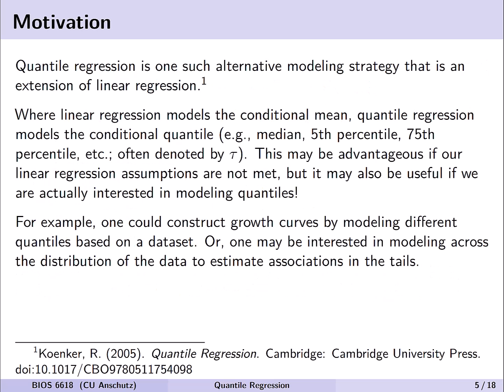And one such strategy, of course, based on the name of this lecture, is quantile regression. This is really an extension of linear regression. Whereas linear regression models the conditional mean, quantile regression models the conditional quantile. Now this might be something like the median, or it could even be something more specific, like the 5th percentile, 75th percentile, etc. And oftentimes we'll denote this by the notation here, tau. Now this modeling approach can be especially advantageous if our linear regression assumptions are not met, but also could be useful if we're actually interested in modeling quantiles, not just the mean, but things like that 5th percentile or other quantiles.